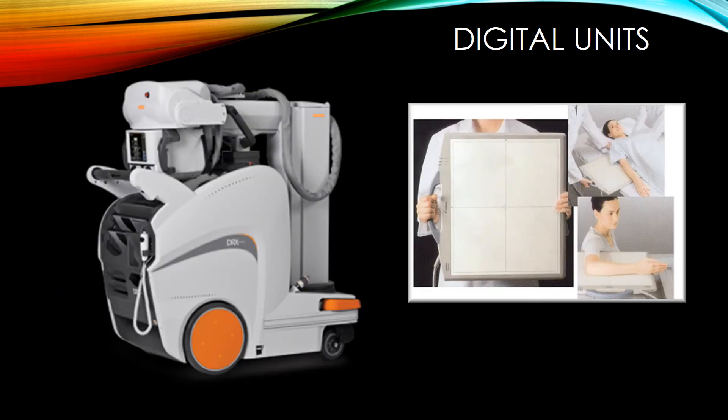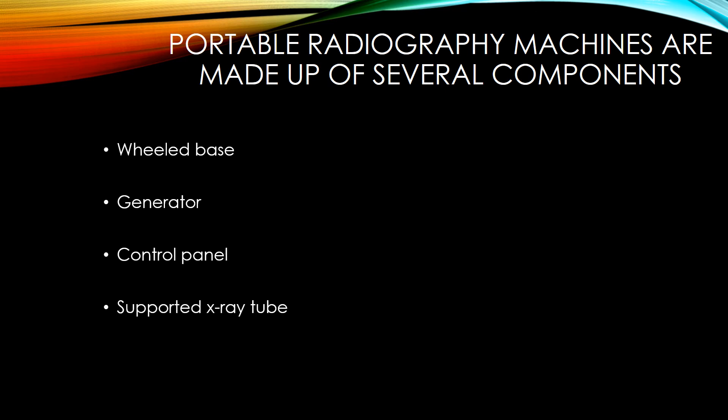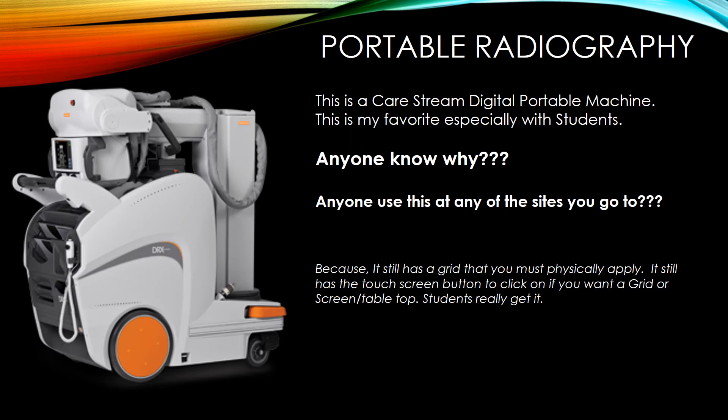Digital units: portable radiography machines are made up of several components — a wheeled base, a generator, a control panel, and a supported x-ray tube. This is a CareStream portable machine, which is a favorite especially with students because it still has a grid that you must physically apply. It has a touch screen button which you click when you want a grid, a screen, or tabletop technique, and students really seem to get it.